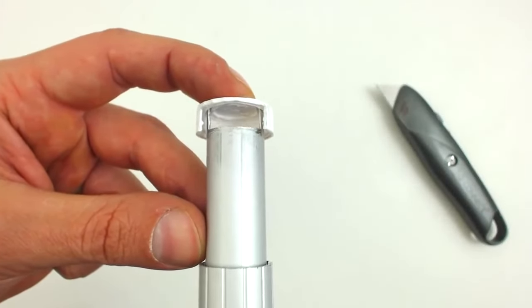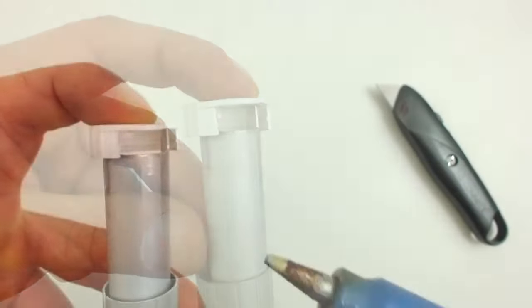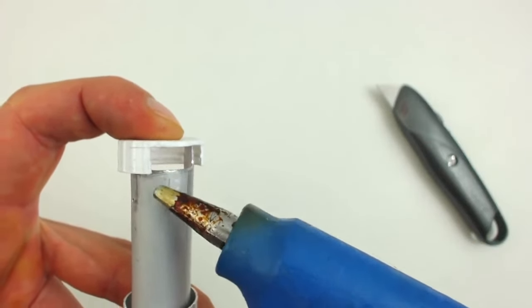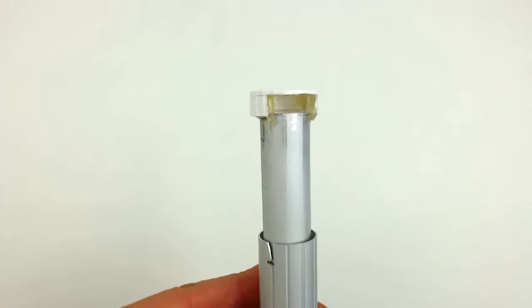Once we have cut the window, without moving it, we apply silicone all over so we can fix it in its final position. And this is how it should look like.